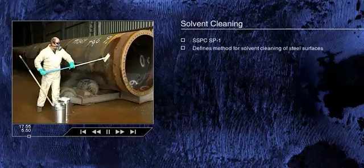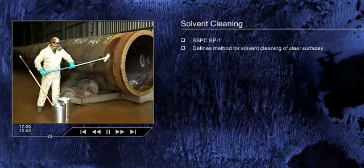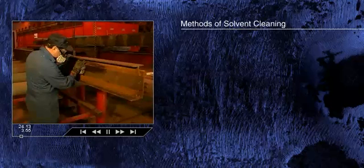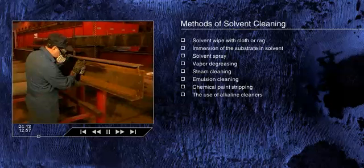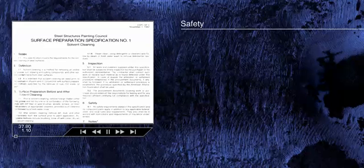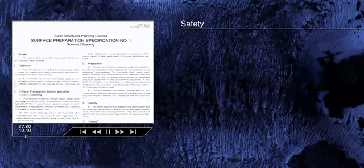SSPC SP1 defines the options for solvent cleaning of steel surfaces to remove oil, grease, dirt, soil, drawing compounds, and other similar organic compounds, for a wide variety of solvents. You need to be sure that there is no problem with smearing contaminants over the surface with the solvent rather than removing them. SSPC SP1 stresses the need to observe current regulations, particularly restrictions on the release of solvents into the immediate work environment.